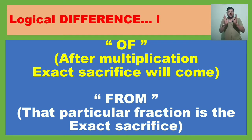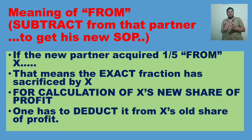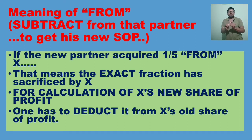Remember: if you understand the meaning of 'of' and 'from', it is easy for you to calculate the new profit sharing ratio. The meaning of 'from': after getting the meaning of 'from', if you subtract from that partner's share of profit, you will get his new share of profit. So if the new partner acquired one-fifth from X, that means that particular one-fifth he has sacrificed from his share of profit. For calculation of X's new share of profit, you have to deduct that one-fifth which he has sacrificed — that is the exact share of profit he has sacrificed.